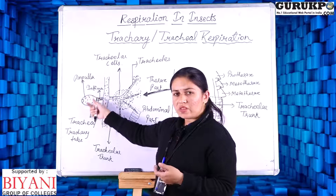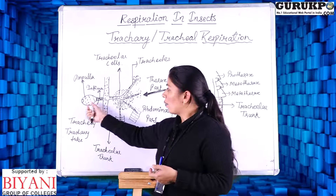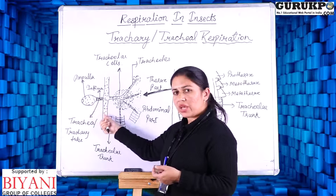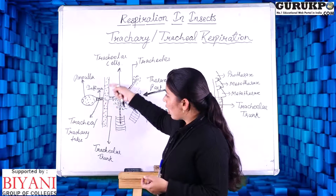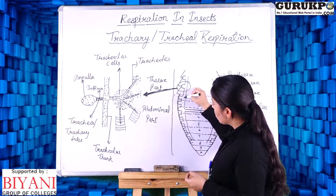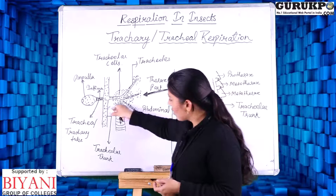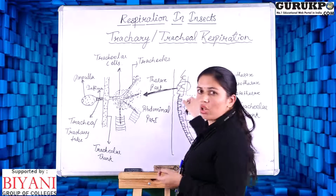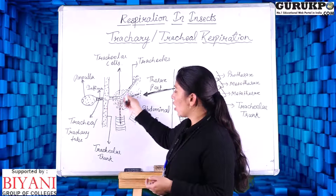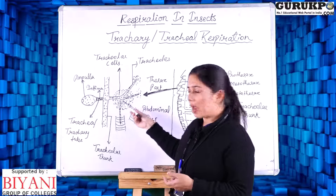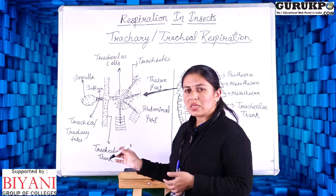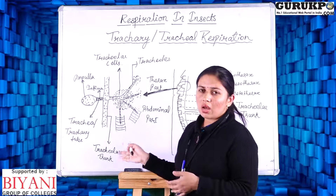The air which enters from the spiracle passes to the ampulla, then the ampulla leads into the tracheary tubes. All the tracheary tubes join together, and these tracheary tubes then lead into the tracheoles — the further branches which are called tracheoles. These tracheoles reach to the cells and tissues of the insect body.